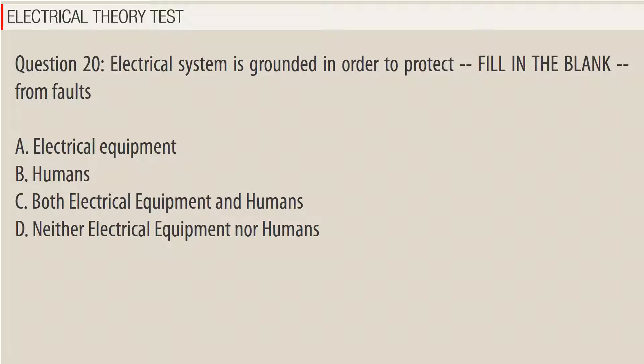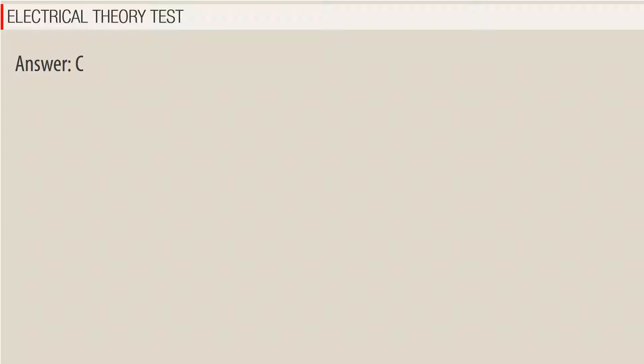Question 20: Electrical system is grounded in order to protect _____ from faults. A. Electrical equipment, B. Humans, C. Both electrical equipment and humans, D. Neither electrical equipment nor humans. Answer: B.